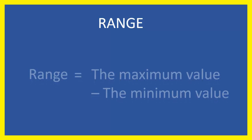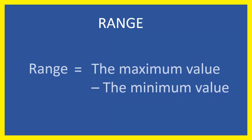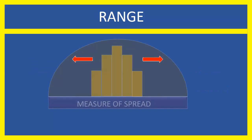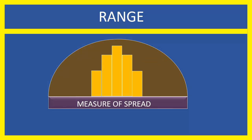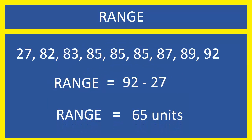Range is simply the maximum value minus the minimum value. It talks about how much the spread is in the distribution. In the above data set, the range is 65 units.